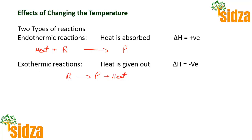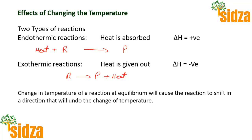Now looking at the change of temperature — as per Le Chatelier's principle, the equilibrium will react in a way so that it can undo the change. The change in temperature of a reaction at equilibrium will cause the reaction to shift in a direction that undoes that temperature change. So if you increase the temperature, the equilibrium will try to decrease it; and if you decrease the temperature, the equilibrium will react to increase it.